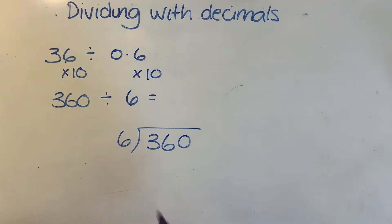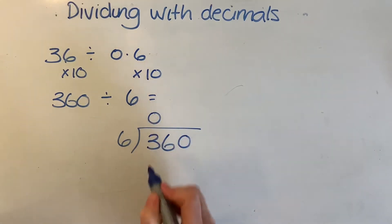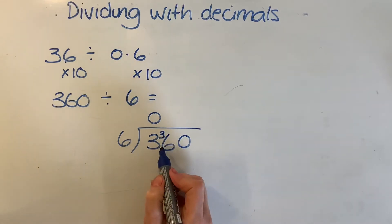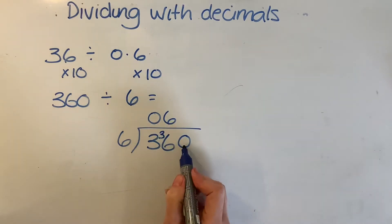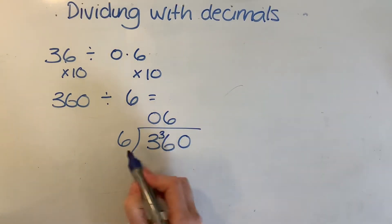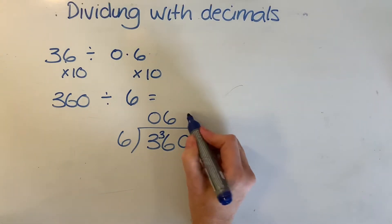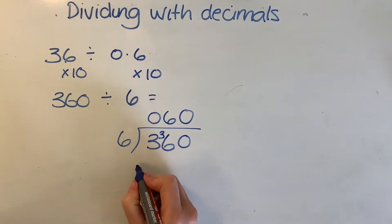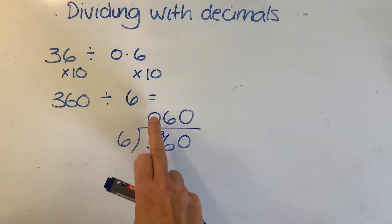How many 6s into 3? None. How many 6s into 36? Carry the 3 over — the answer is 6. I've still got a 0 here, so I've still got to say how many 6s are in 0 — it's 0. So I've got an answer of 060, which means just plain old-fashioned simple 60. I don't need to actually put that 0 in there.